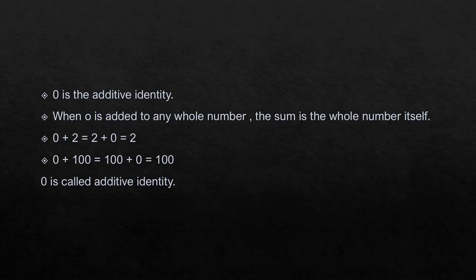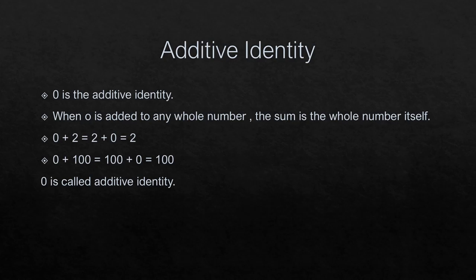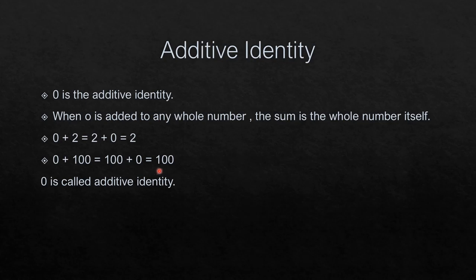What is additive identity? When 0 is added to any whole number, the sum is the whole number itself. For example, 0 plus 2 equals 2, and 2 plus 0 equals 2. Similarly, 0 plus 100 is 100 and 100 plus 0 is always 100. So 0 is called the additive identity.